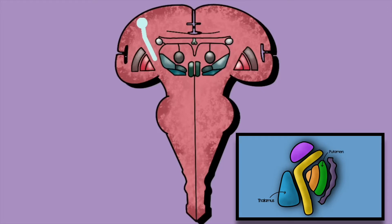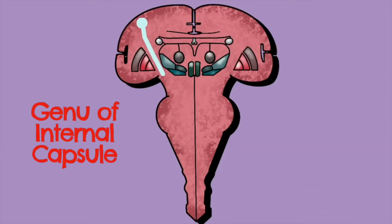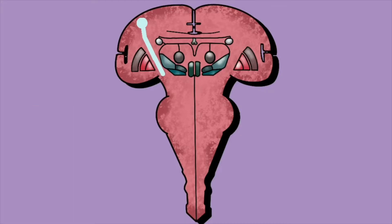The fibers then continue through the region known as the internal capsule, which sits between the basal ganglia and the thalamus. In cross section, we can see the relationships between the thalamus and the basal ganglia structures. The tract runs through a part of the internal capsule known as the genu — the middle section where it changes direction — not the anterior limb, not the posterior limb, but the genu.